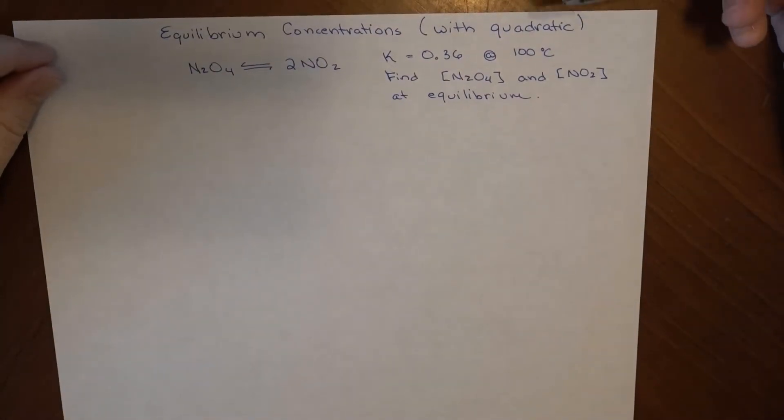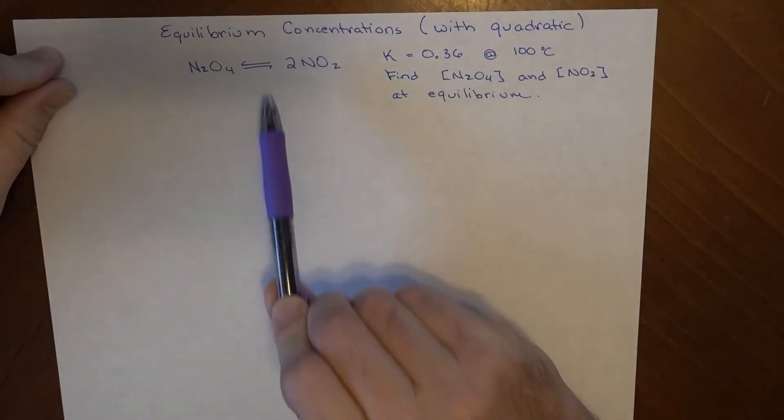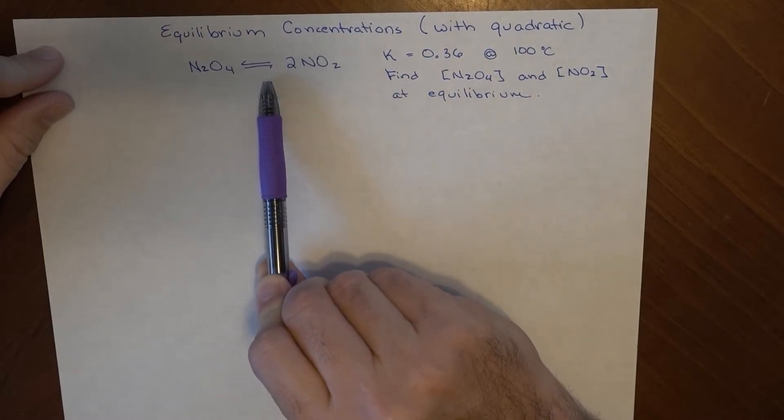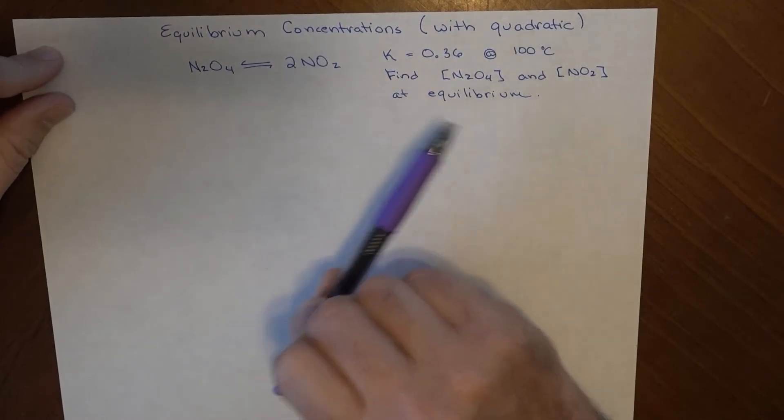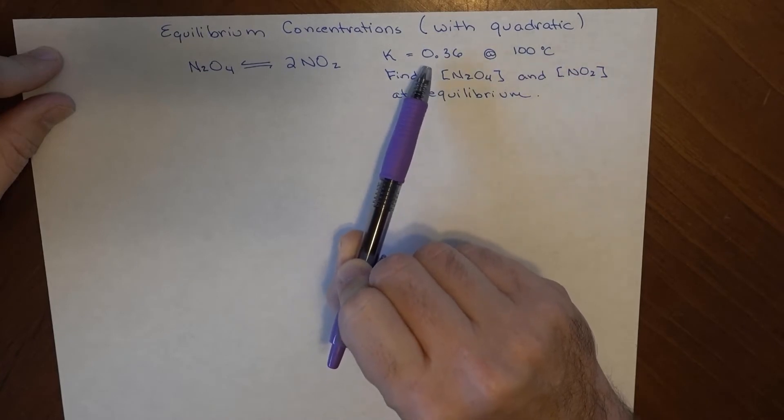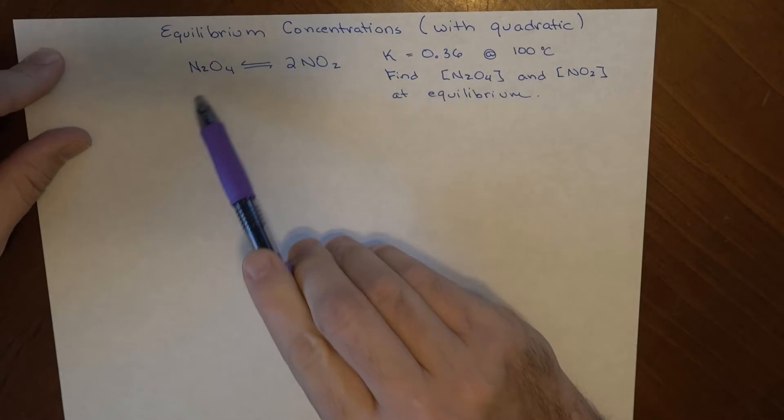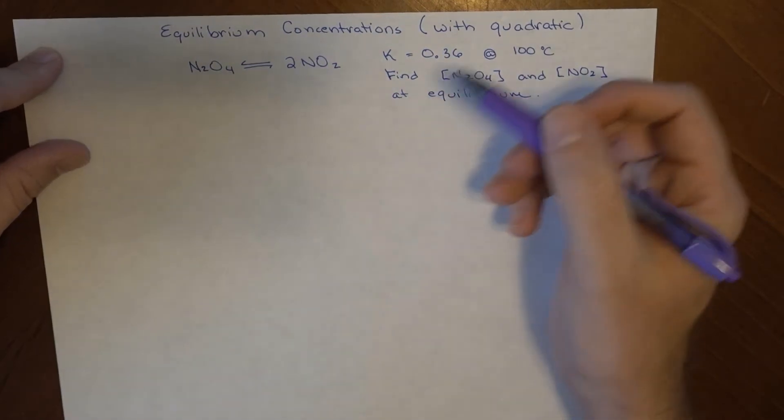In this example, we are going to try to figure out what the equilibrium concentrations are for this reaction setup with this K value at equilibrium.